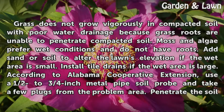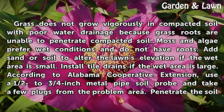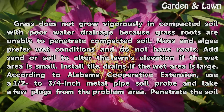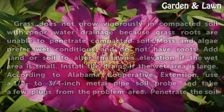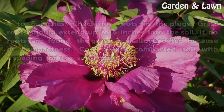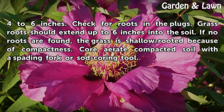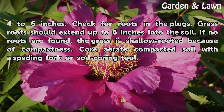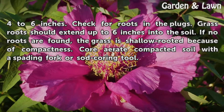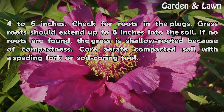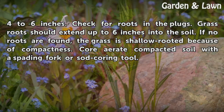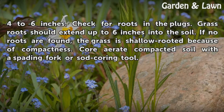According to Alabama Cooperative Extension, use a ½ to ¾ inch metal pipe soil probe and take a few plugs from the problem area. Penetrate the soil 4 to 6 inches. Check for roots in the plugs. Grass roots should extend up to 6 inches into the soil. If no roots are found, the grass is shallow rooted because of compactness.